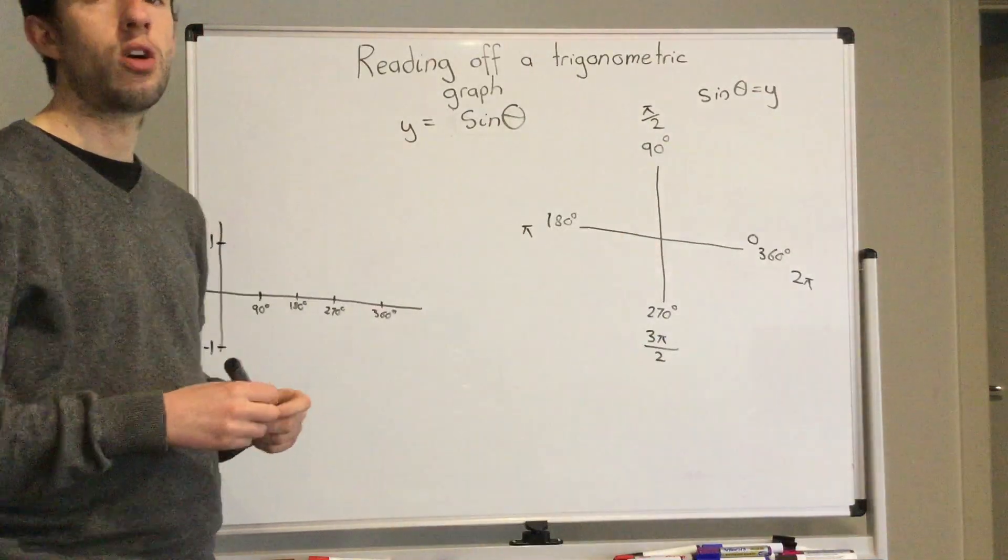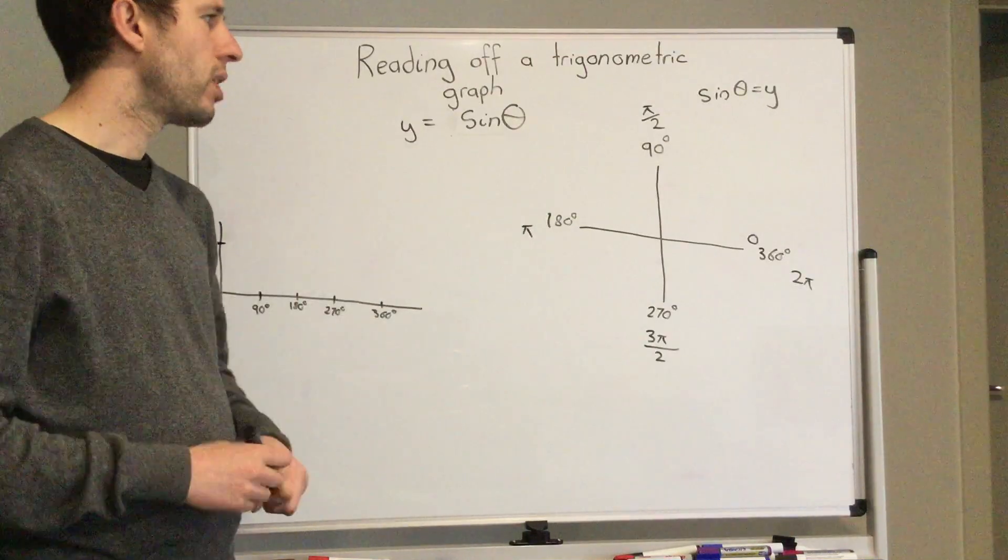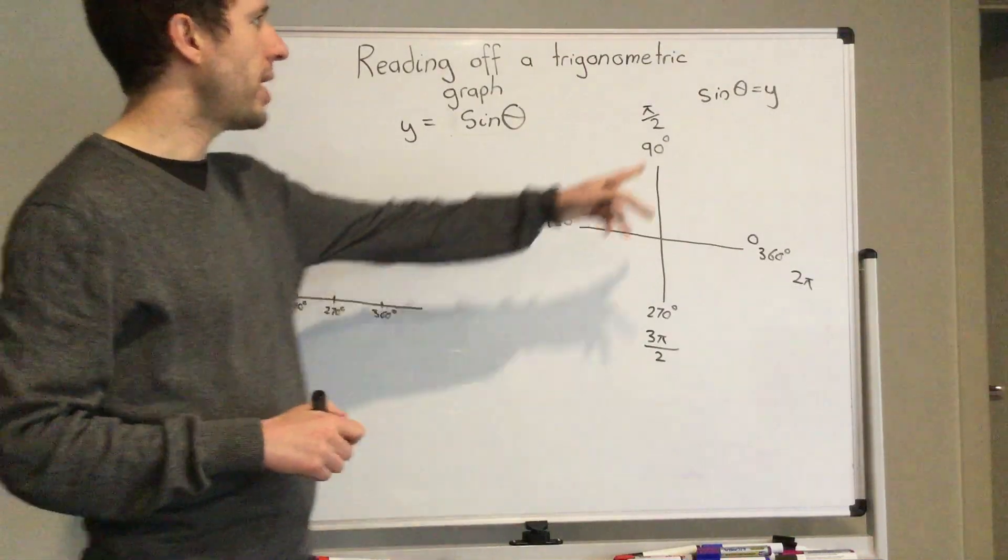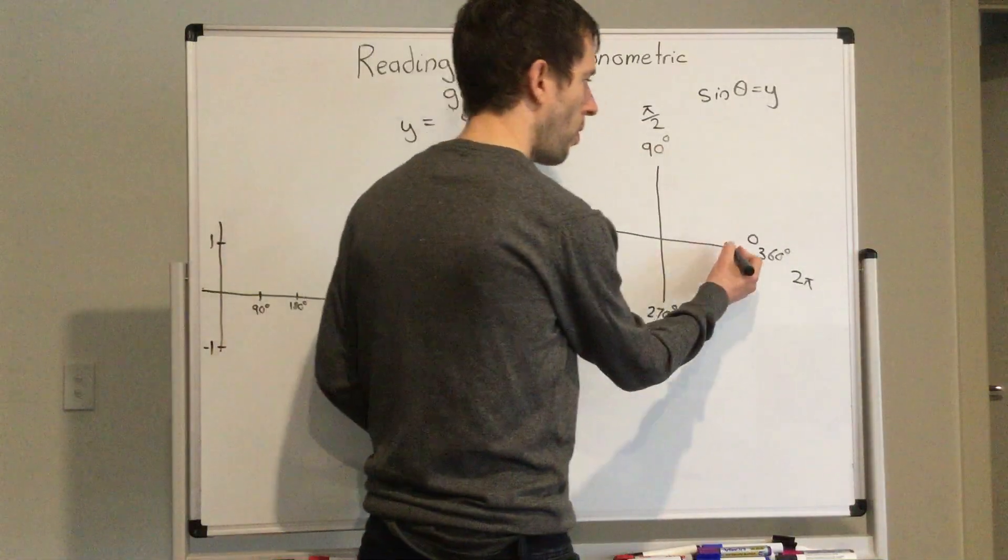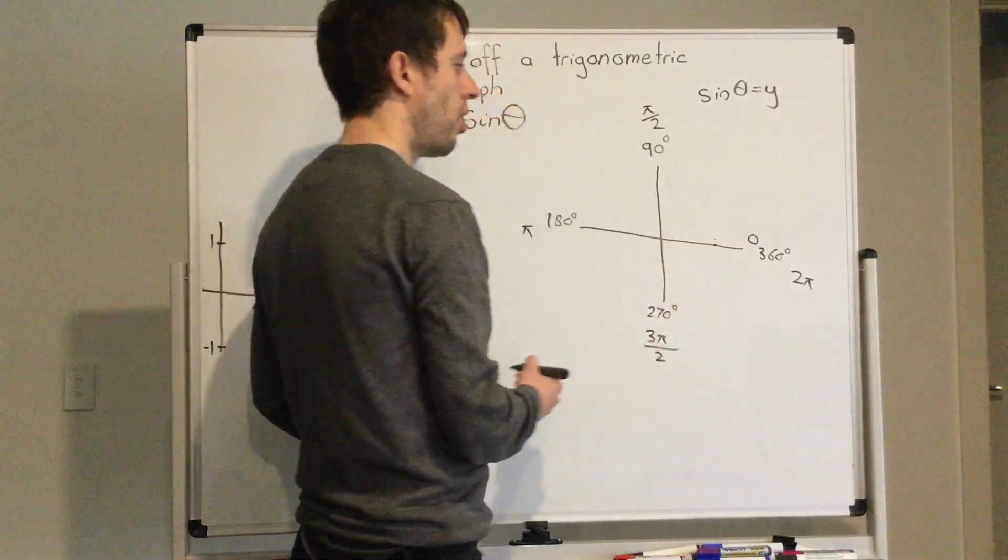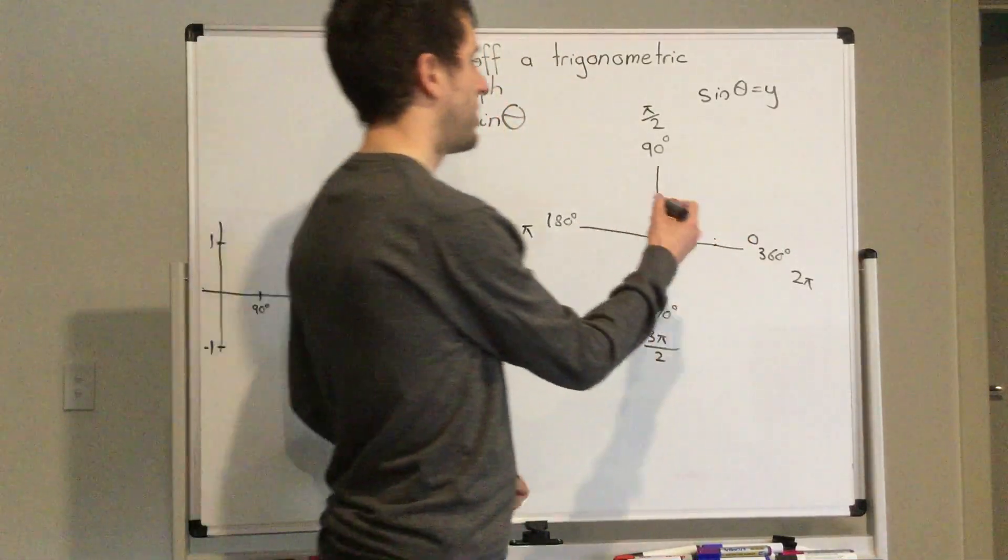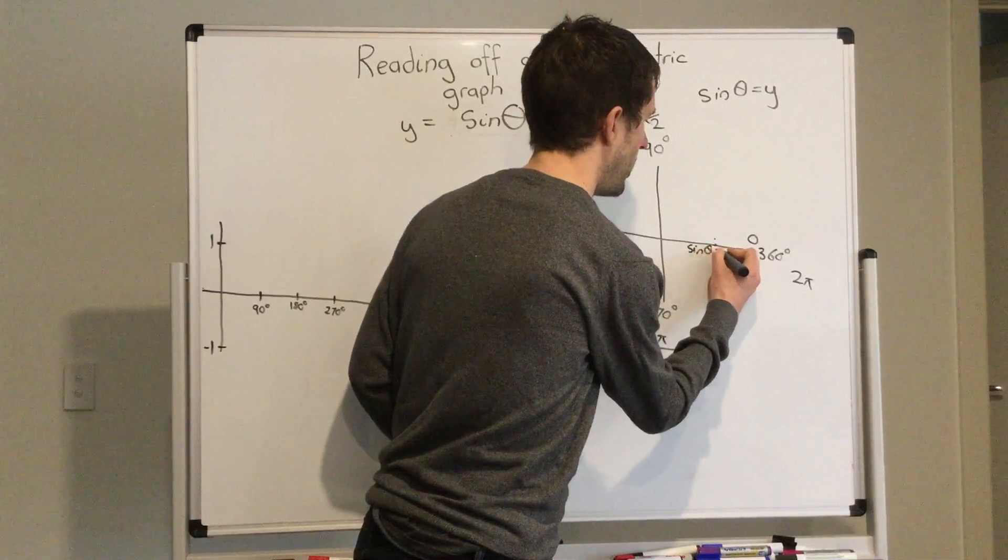Because our circle that we are doing is a radius of one unit. So now we know that we are going to be thinking about it based on sine alpha equals y.